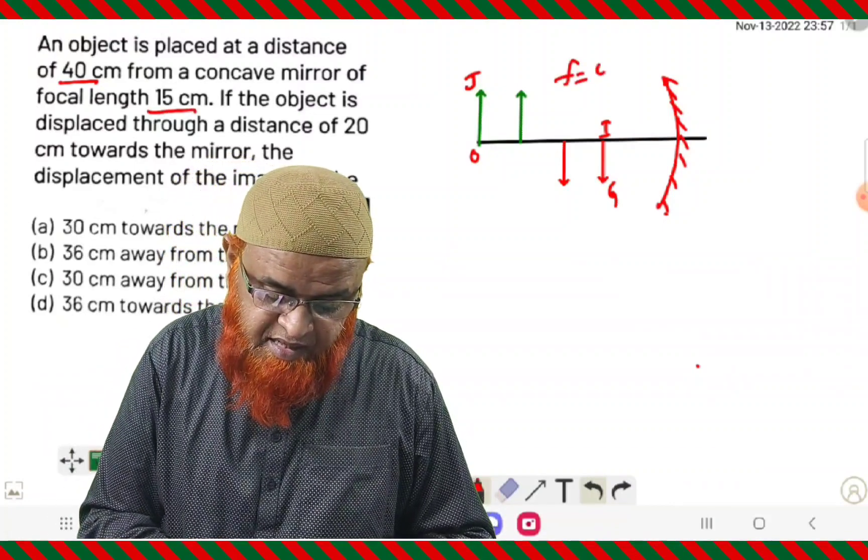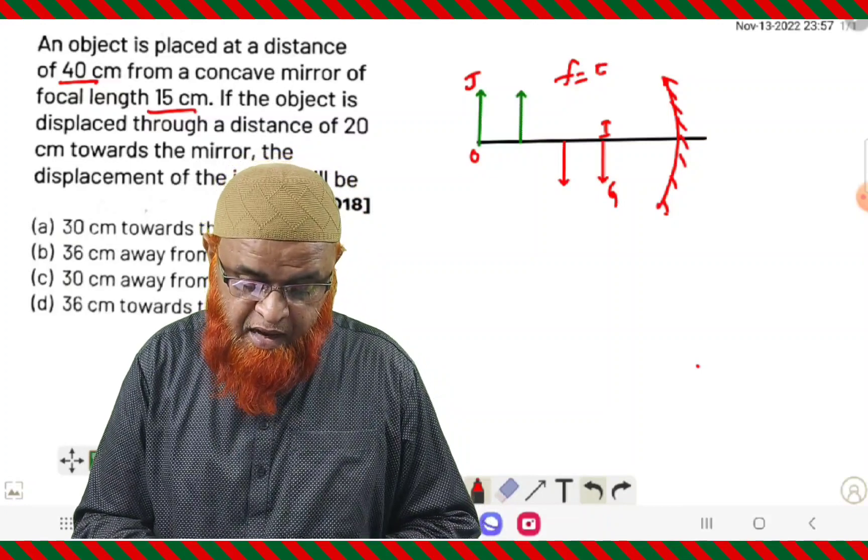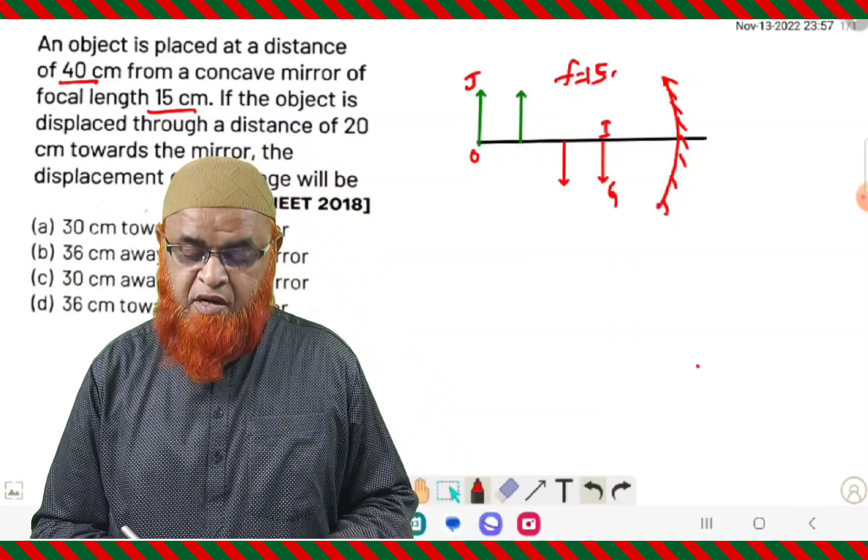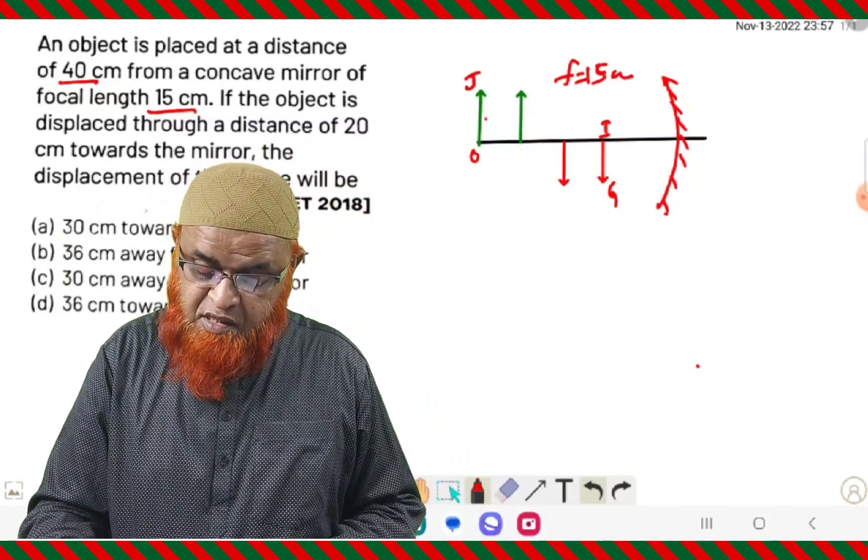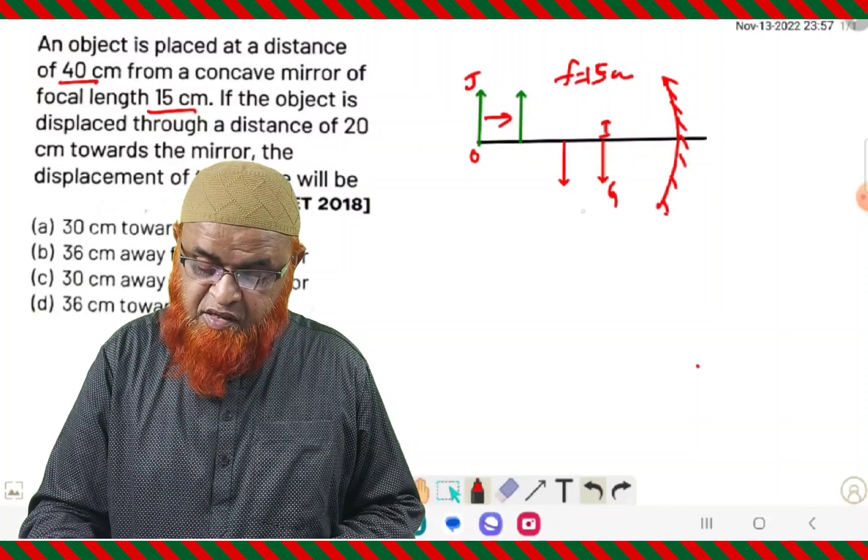It is given that the object is placed at a distance of 40 centimeters and focal length is given as 15 centimeters. So focal length of this mirror is taken as 15 centimeters here.